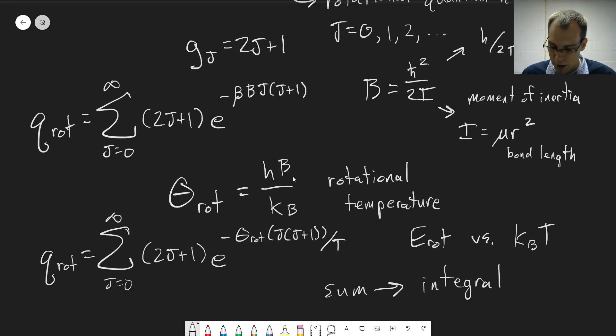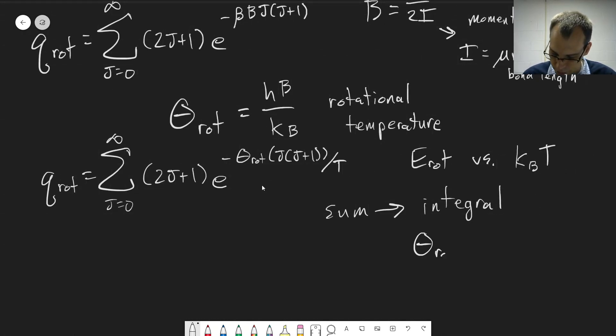And we can go ahead and solve this that way. Another way of thinking, another way of saying approximately the same thing, is comparing the rotational temperature versus the actual temperature, because that's also in the exponential term here. So if the rotational temperature is much, much less than T, that's the same thing as saying that the rotational energies are much, much less than kBT.